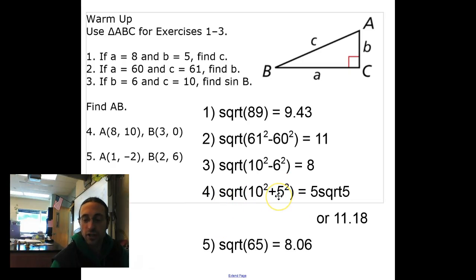In problem 4, they just want you to use the distance formula. The 10 comes from 10 - 0, square that you get 100. 8 - 3 is 5, square that you get 125 when you add them together. Take the square root of that, that's either 5√5 in simplest radical form or 11.18. The last one, 6 - (-2) is 8, 8² = 64. 2 - 1 is 1, 1² = 1. Add them together you get 65, take the square root and 8.06.